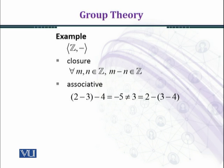Then we subtract 3 and 4 first, and subtract that result from 2, and we get 3. The two results are not equal. We have provided a counter-example. Therefore, the set of integers is not associative under the binary operation subtraction, and so Z under subtraction is not a group.